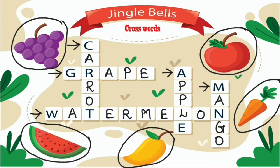We have completed this crossword, children. The names and spellings we have learnt today are: Carrot — C-A-R-R-O-T; Grape — G-R-A-P-E; Watermelon — W-A-T-E-R-M-E-L-O-N; Apple — A-P-P-L-E; Mango — M-A-N-G-O.